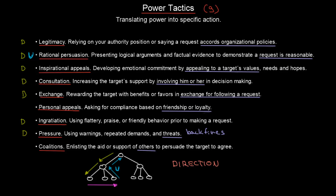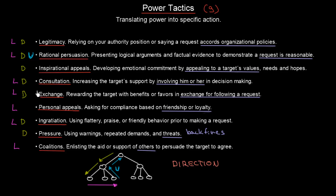Finally, for lateral or horizontal communication, we can use legitimacy and rational persuasion. Inspirational appeals are not really useful for lateral influence. Consultation, exchange, personal appeals, and ingratiation can all be used laterally. Pressure should not be used in a lateral sense, but coalitions are well-suited here. So now you can see which power tactics apply to upward, downward, and lateral communication.